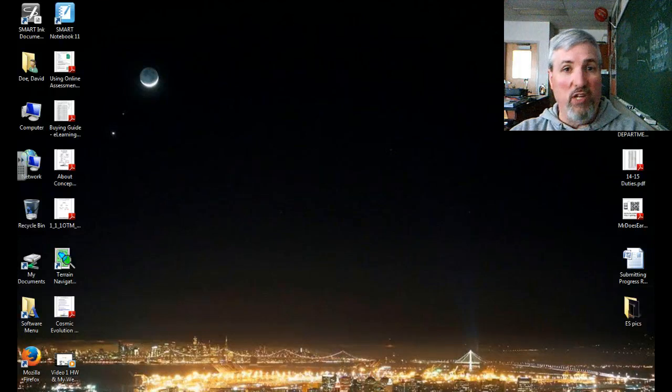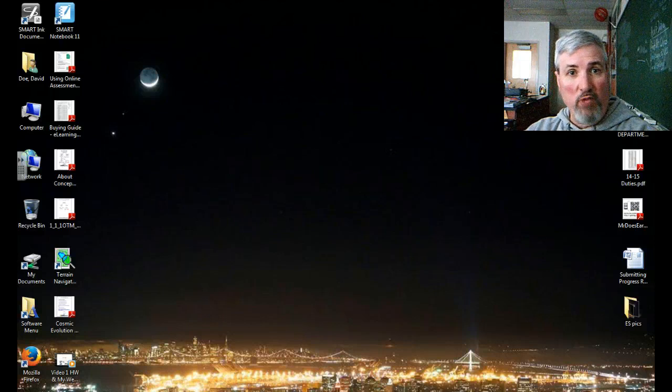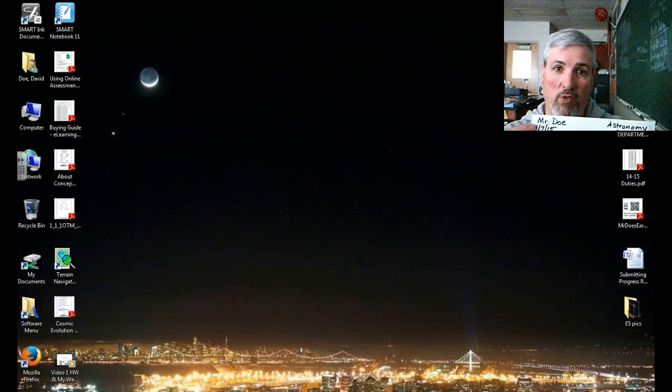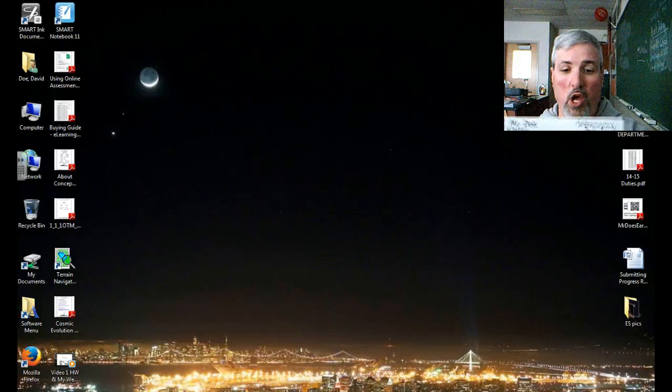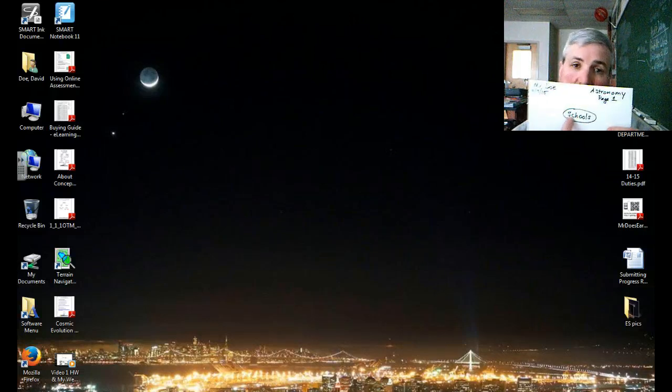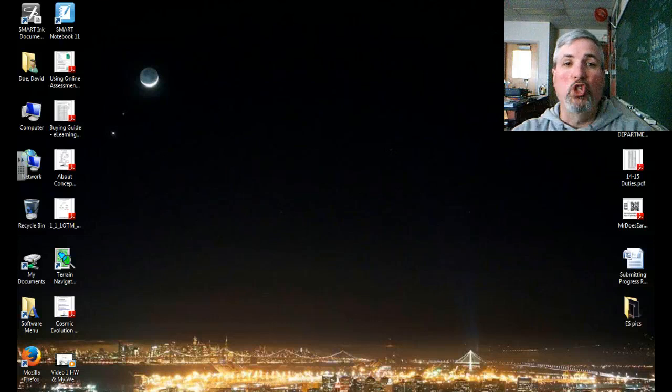Everyone will need a sheet of printer paper. Mrs. Reimann will give out everyone a sheet of printer paper. On one side of it, please put your name in the upper left corner and today's date, 4-7-15. In the upper right, put astronomy, and then underneath that, put page one. You're going to put, towards the top, in a big oval, the word schools.